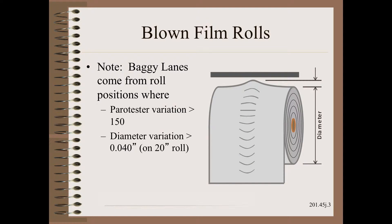The client had already studied the problem well enough to know that rolls whose peak-to-peak hardness variation exceeded 150 would not be acceptable to customers. They could not reliably make rolls to that level, so waste was too high to be economically viable. What the client did not notice was that the unacceptably baggy rolls also had a diameter variation exceeding 40 thousandths of an inch, or about 1000 microns.